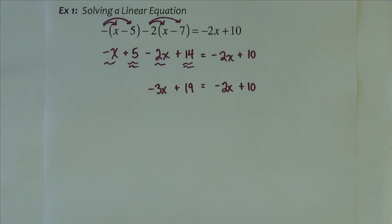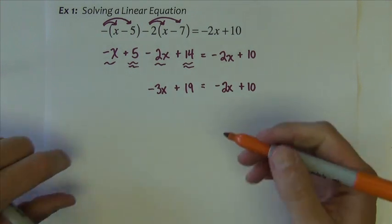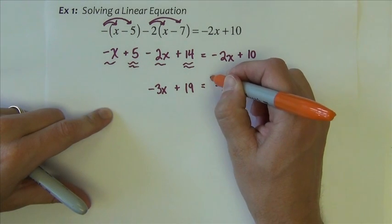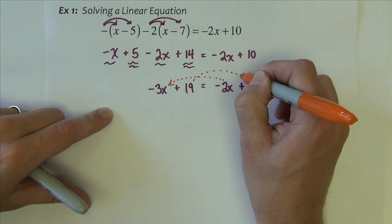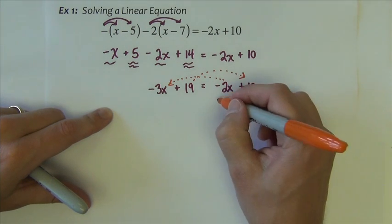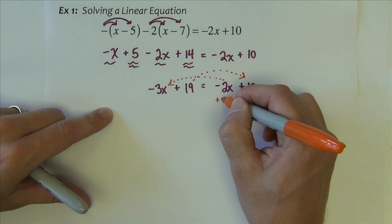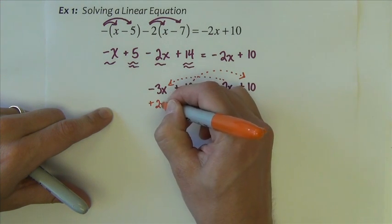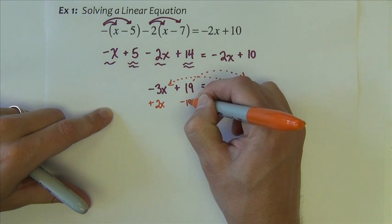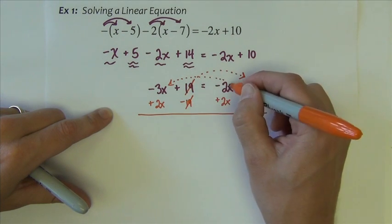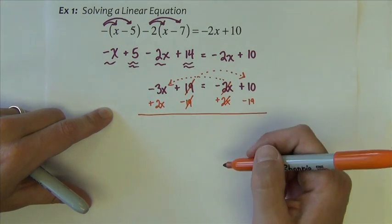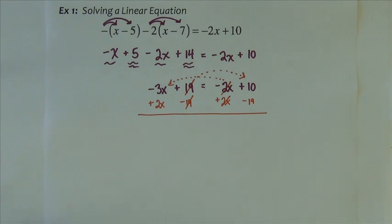Now at this point in the problem, I need to get all of my x's or variable terms on one side and all of my non-variable terms on the other side. So I'm going to take the x and move it over to the left, take the non-x and move it over to the right, and we do opposite operations to do that. Subtraction, the opposite is addition. I'm going to add 2x, and then I'm adding 19, the opposite is to subtract 19. So the positive negative 19 cancels, the negative 2x positive 2x cancels.